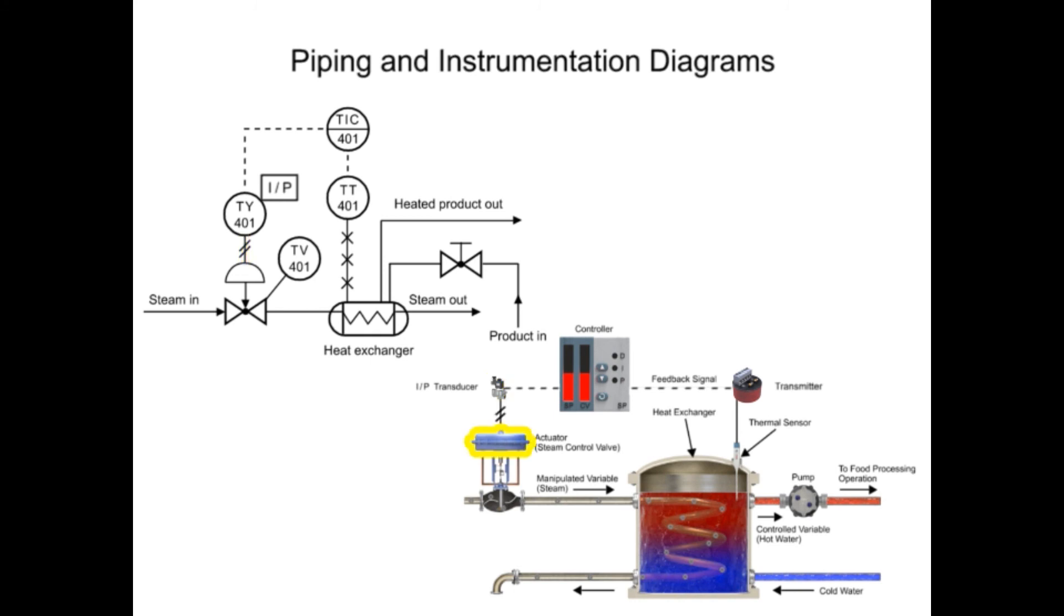The pneumatic controlled diaphragm actuator that opens and closes the globe valve regulates steam in the process. The actuator is represented by the half circle in the P&ID. The arrow pointing downwards from the actuator indicates a fail closed valve type.